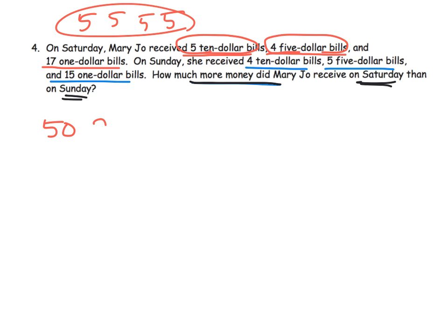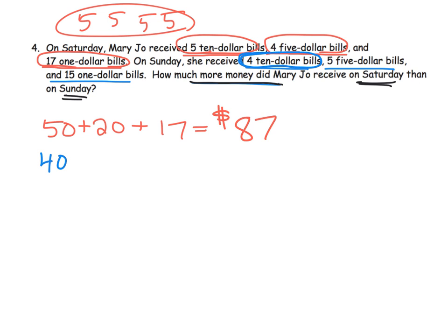And she received seventeen one-dollar bills on Saturday. This is a great chance for students to think about place value. Let's add up all the tens: five tens plus two tens plus one ten is eight tens, and then seven ones — so that's eighty-seven dollars on Saturday. On Sunday she received four ten-dollar bills — that's forty — and five five-dollar bills: five, ten, fifteen, twenty, twenty-five — that's twenty-five dollars.